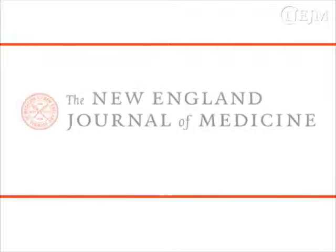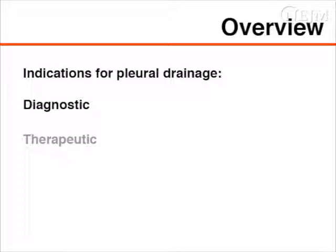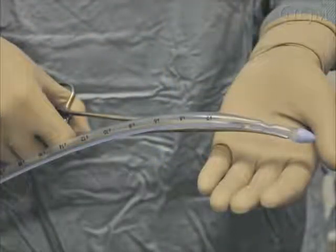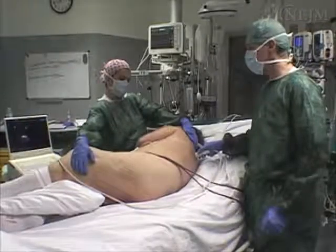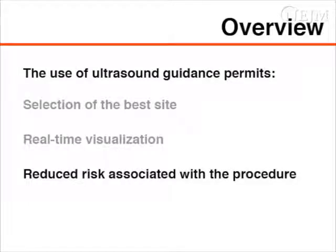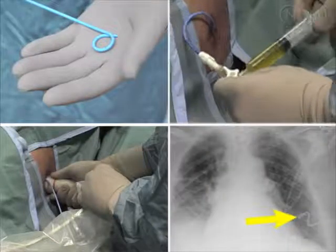This is a video in clinical medicine from the New England Journal of Medicine. Drainage can be performed at the bedside with a single thoracentesis or, for continuous drainage, with the insertion of an intercostal drain. The use of ultrasound guidance permits the selection of the best site for access to the pleural effusion, step-by-step real-time visualization of the lung structures, the advancing needle, and reduced risk associated with the procedure. This video demonstrates ultrasound-guided placement of a small-bore pigtail catheter for drainage of a pleural effusion.